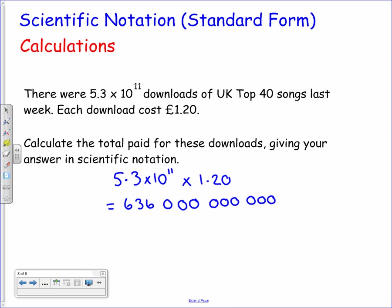Doing this calculation gives us a fairly large number, so it's better to express it in scientific notation. As before, we place the decimal point between the first two non-zero digits and count how many times it's moved — counting in threes: 3, 6, 9, 10, 11 — giving us something × 10^11. Because we're talking about money, we also need to insert the pound sign, and that's your final answer.